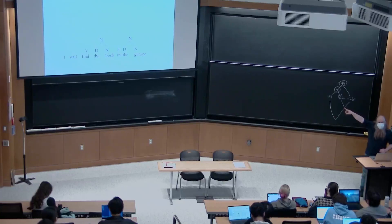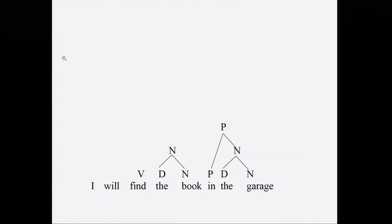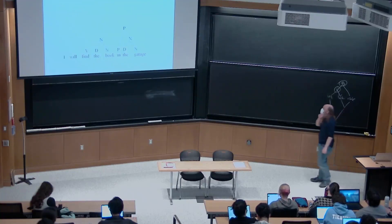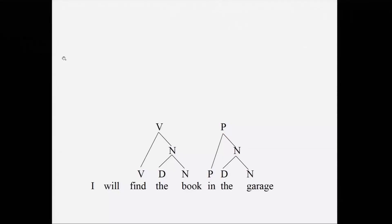From here: we've created 'the book' and 'the garage.' We decided 'in the garage' is also a constituent — it deserves a node, it's a prepositional phrase. So we're going to merge 'in' together with the node we created by merging 'the' and 'garage' — that larger N. We merge P with that larger N and get a larger P, a prepositional phrase with the label P.